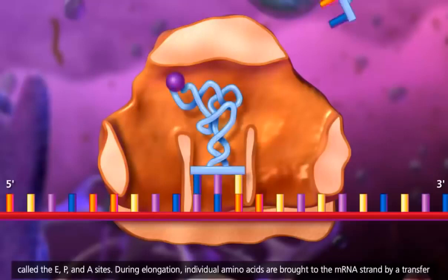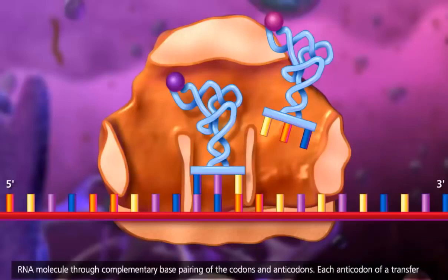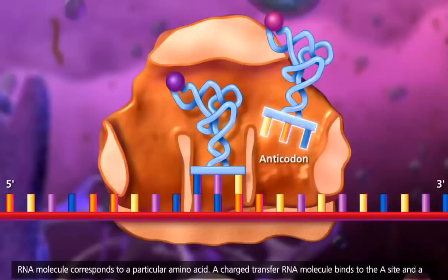During elongation, individual amino acids are brought to the messenger RNA strand by a transfer RNA molecule through complementary base pairing of the codons and anticodons. Each anticodon of a transfer RNA molecule corresponds to a particular amino acid.